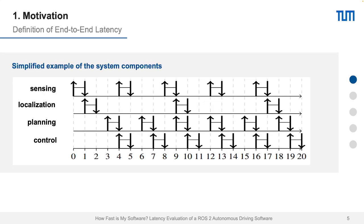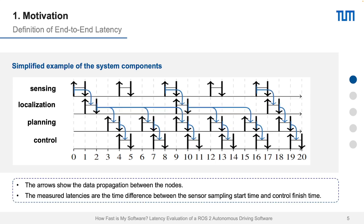We can see that in detail in a simplified example of the system components. When we send something, we need time to process, then do the localization, need some time to process, plan the path, need some time to process, and then control the vehicle. All of that takes time.